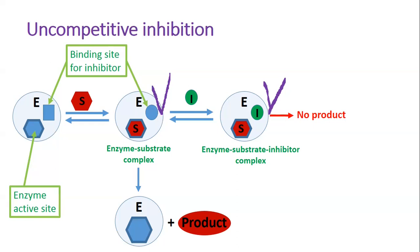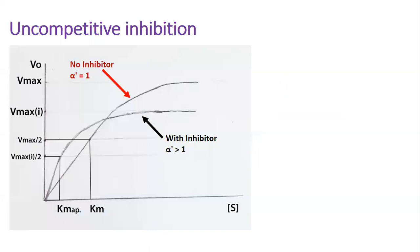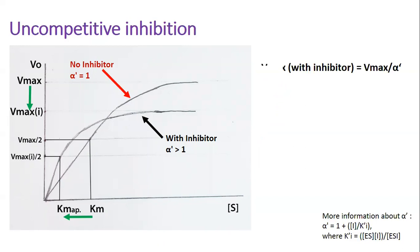Uncompetitive inhibition cannot be reversed by increasing substrate concentration. Interestingly, it works best when substrate concentration is high, because high substrate concentration produces more enzyme-substrate complexes, which then bind uncompetitive inhibitors to form enzyme-substrate-inhibitor complexes. These complexes cannot be converted into product and free enzyme. Thus, the concentration of enzyme-substrate complexes decreases, resulting in lowered velocity. Recall that velocity depends on enzyme-substrate complex concentration. The velocity in the inhibitor's reaction decreases by the factor alpha-prime, which reflects how strongly the uncompetitive inhibitor binds the enzyme-substrate complex.